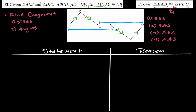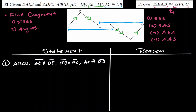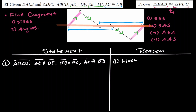Starting with the parallel lines AE and FD, we have a transversal connecting points A, B, C, D. From this, we can identify two congruent angles: angle A and angle D are alternate interior angles, so they are congruent.